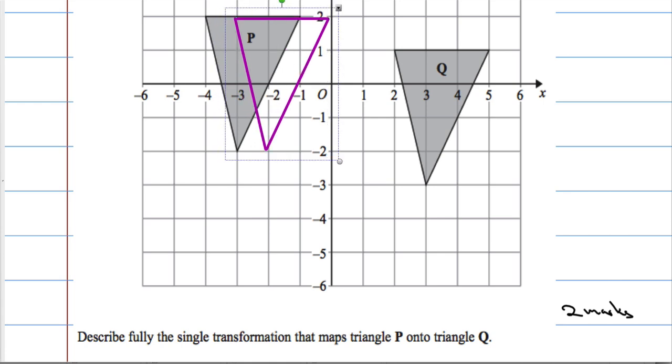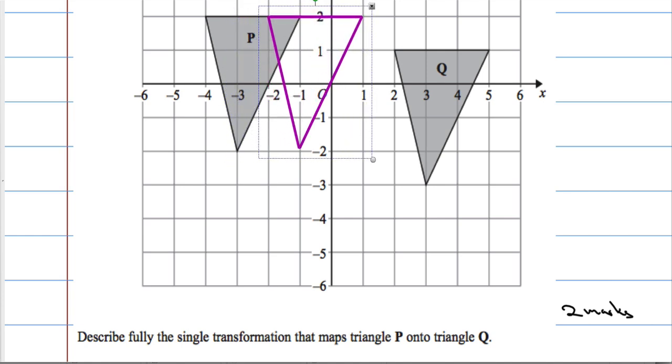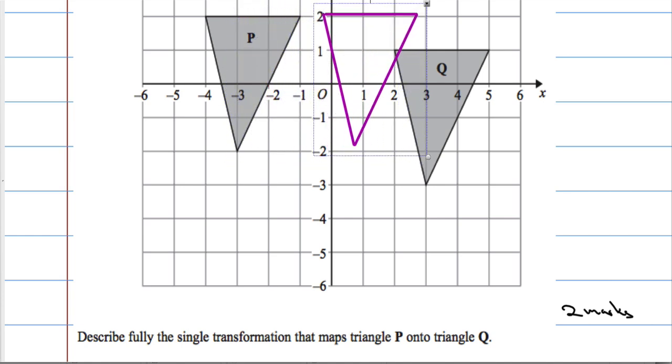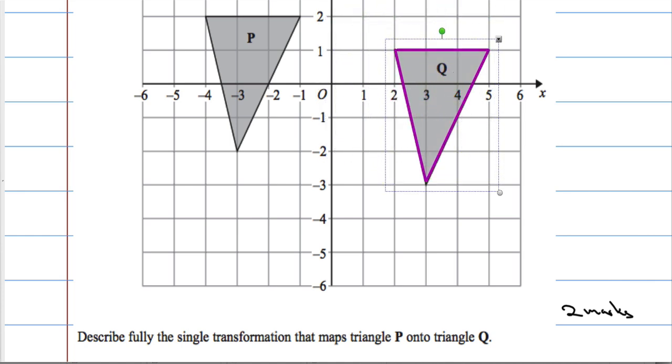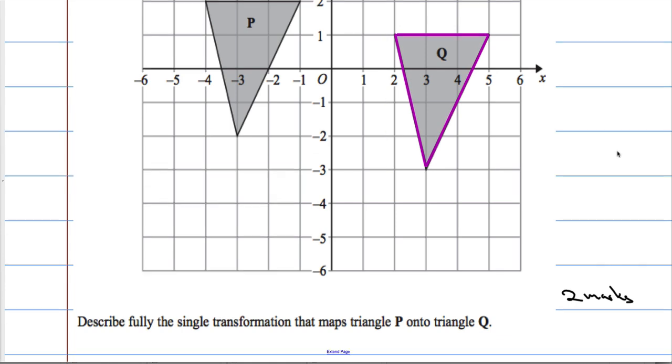It goes one, two, three, four, five, six right, and then one down. So that's how we get from P to Q - it goes six right, one down.